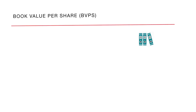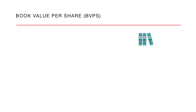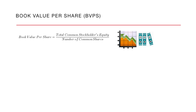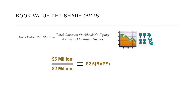Now let us see how it is calculated per share. The company's total equity value — that is 5 million — divided by the outstanding shares, that is 2 million, equals 2.5 dollars, which is the book value per share.